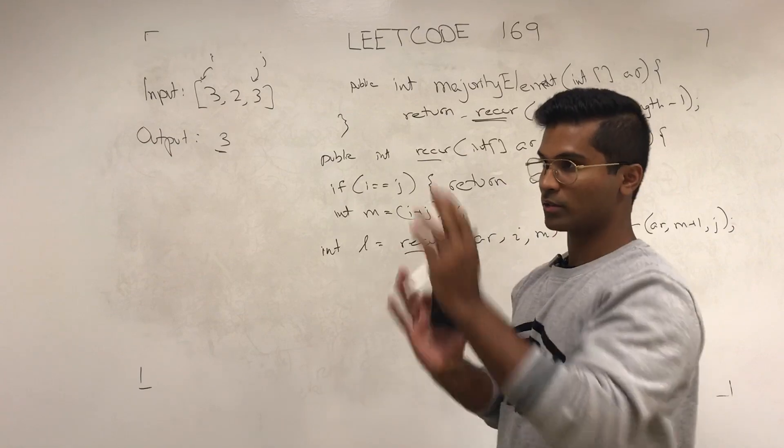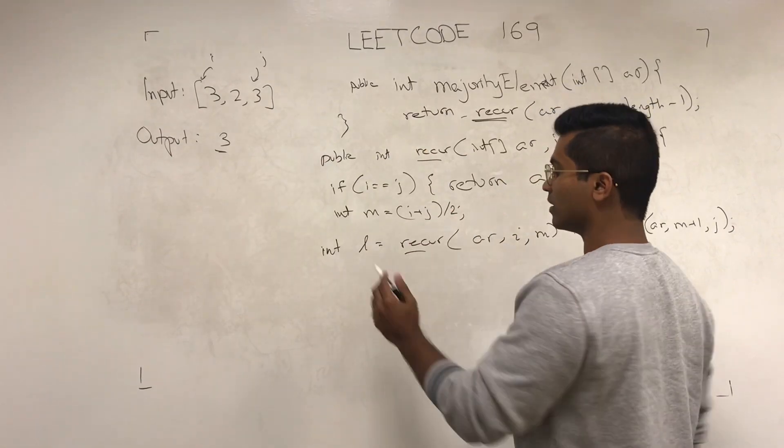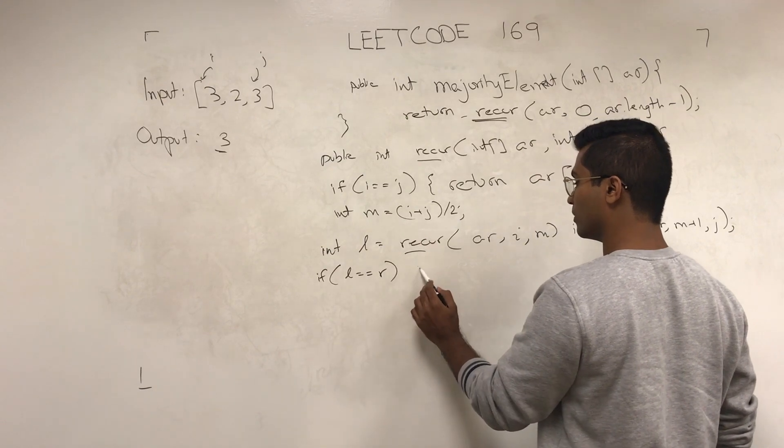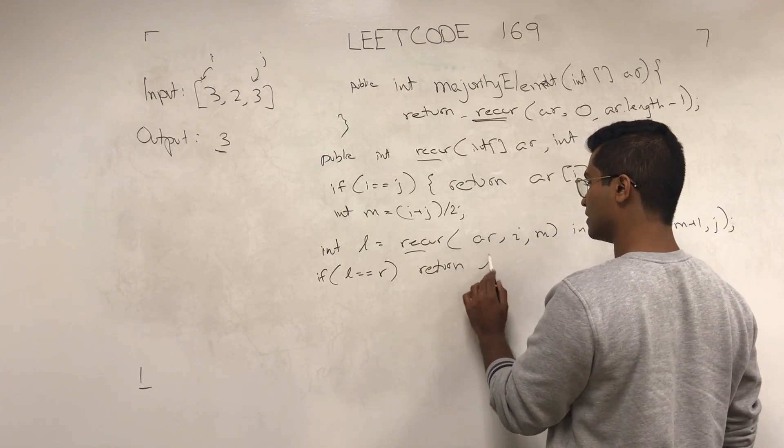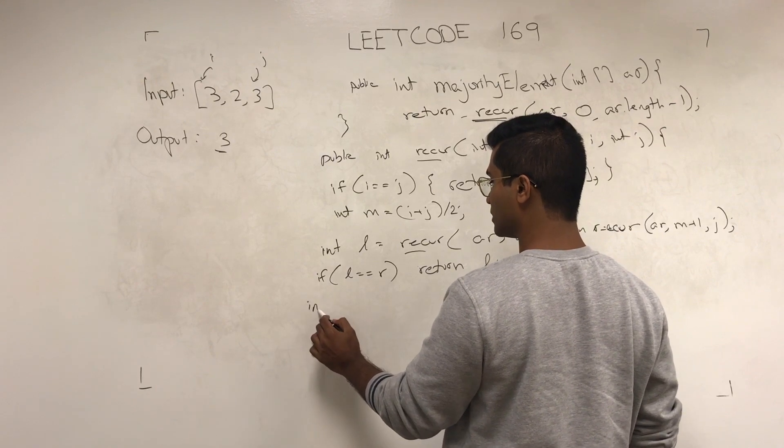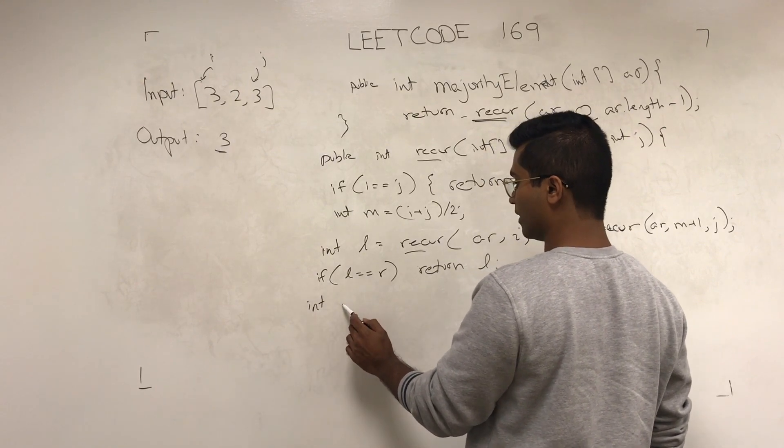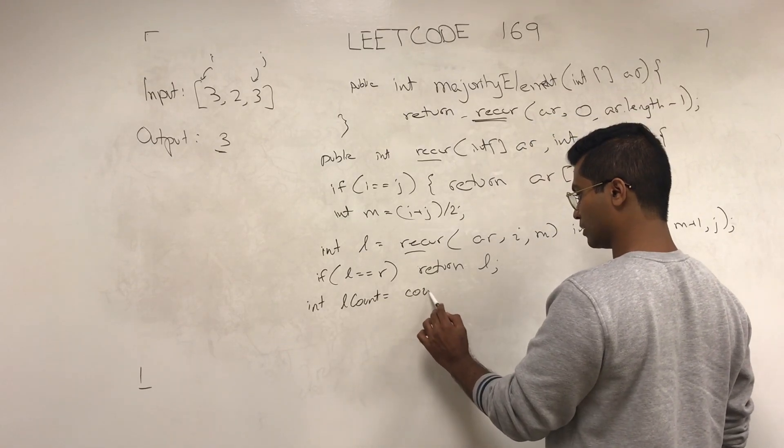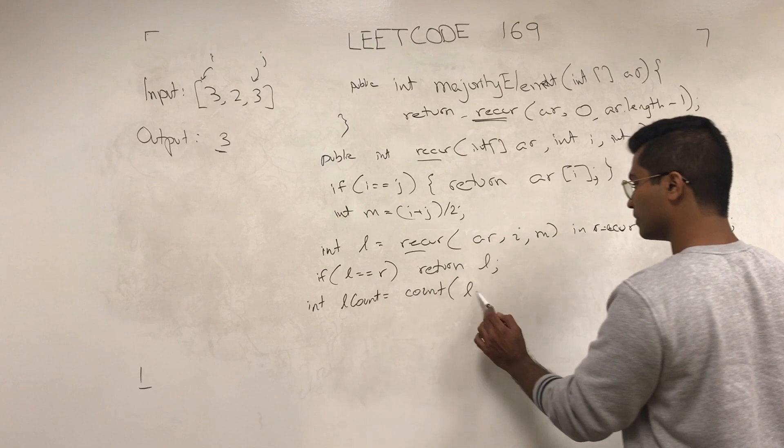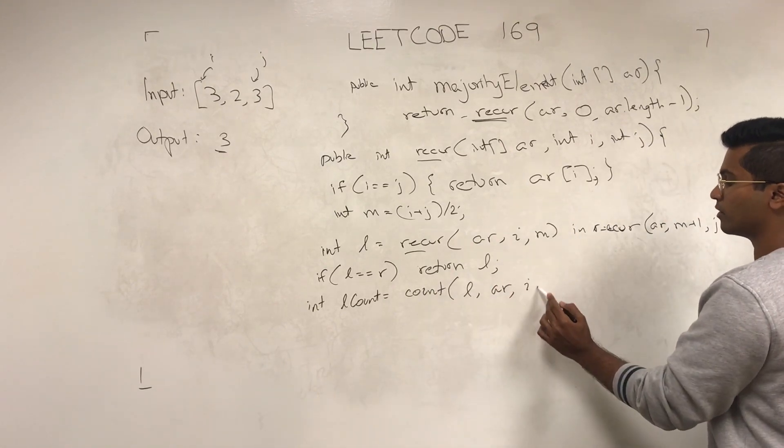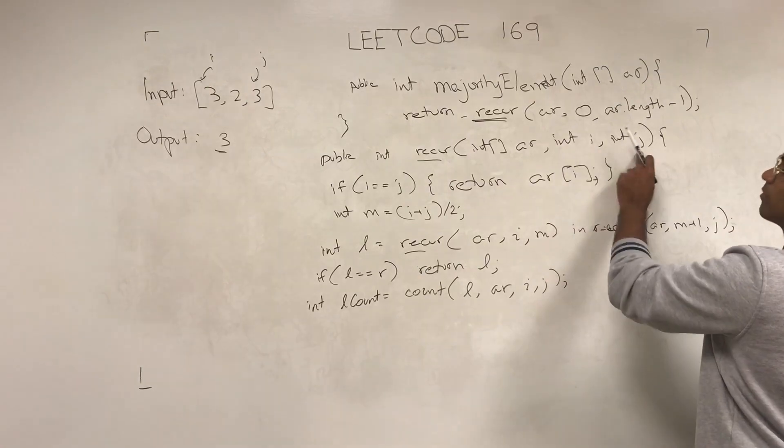There are two recursive stacks that each recur is going to call. Then we're going to see if l is the same thing as r, we're going to return l. Else, what we're going to do is get a count of both of them. lcount, I'm going to call it lcount, is going to be equal to count of l, how many times l comes up in AR given the boundaries i to j that come from the top.